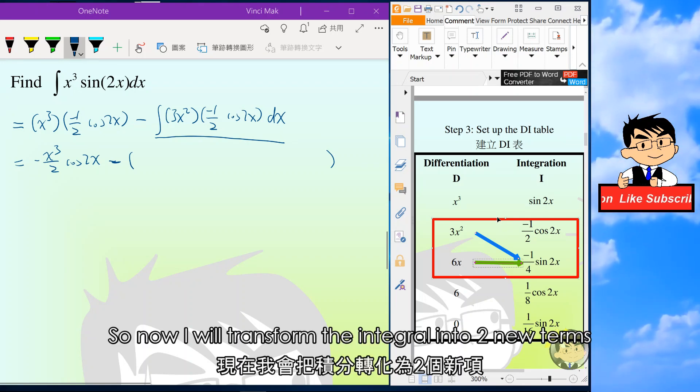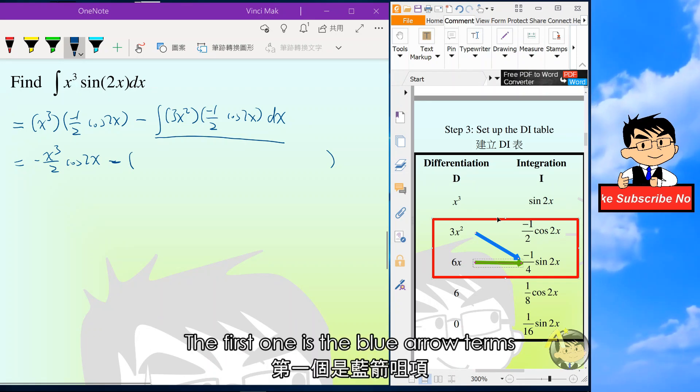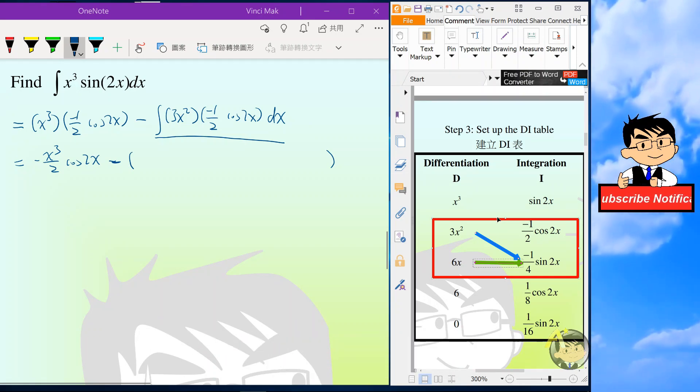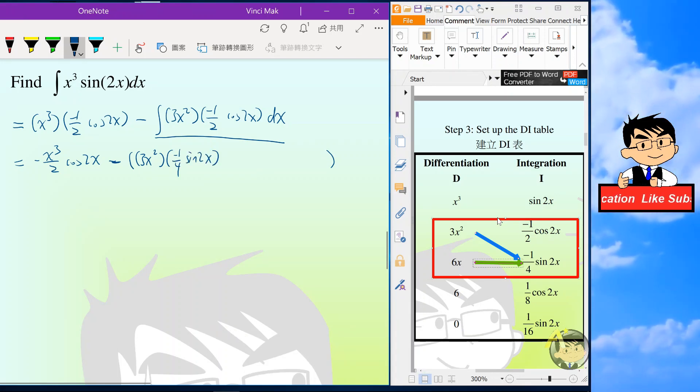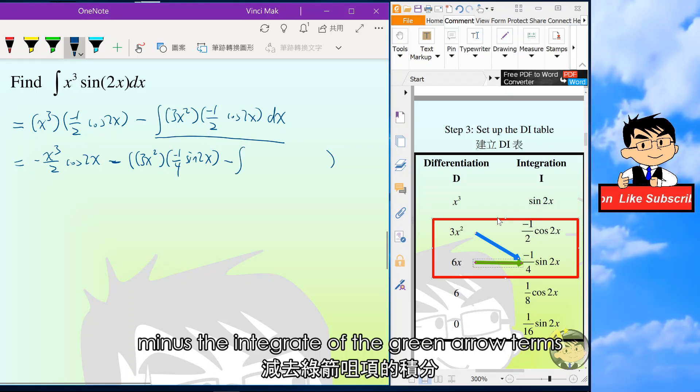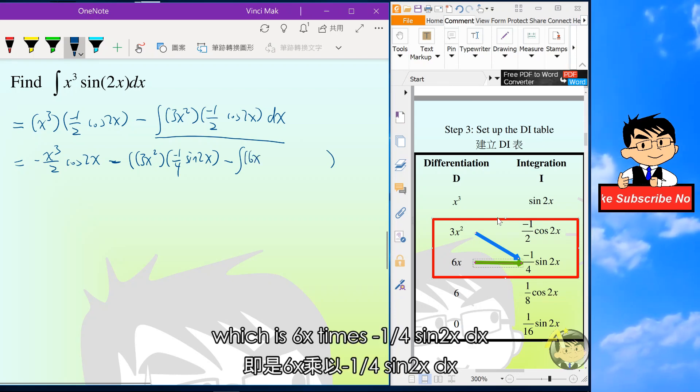So now I will transform the integral into two new terms. The first one is the blue arrow terms, which is 3x squared times negative 1 over 4 sine 2x, minus the integral of the green arrow terms, which is 6x times negative 1 over 4 sine 2x dx.